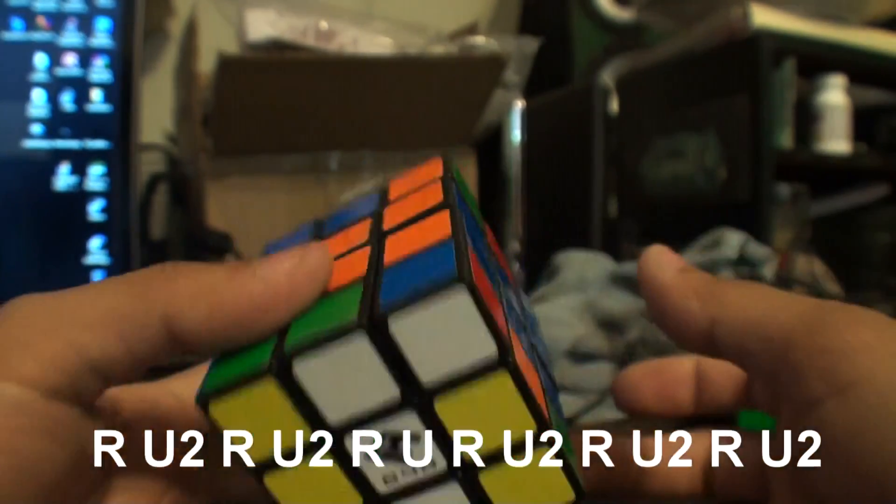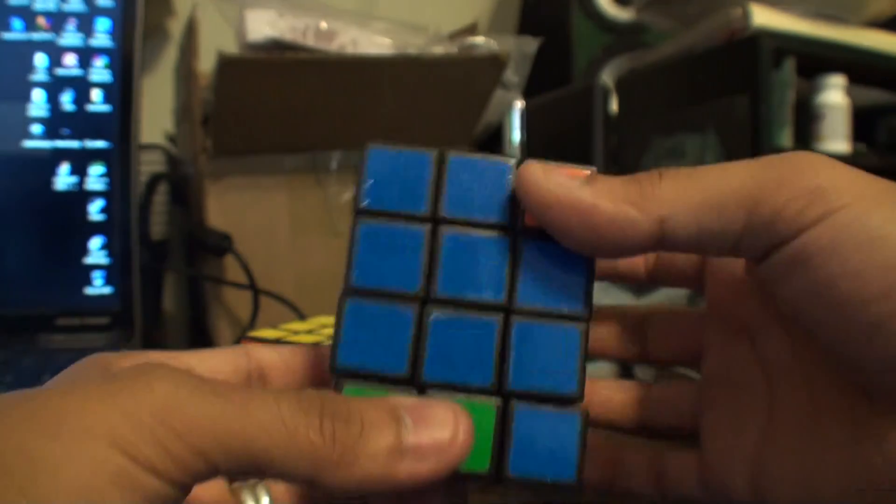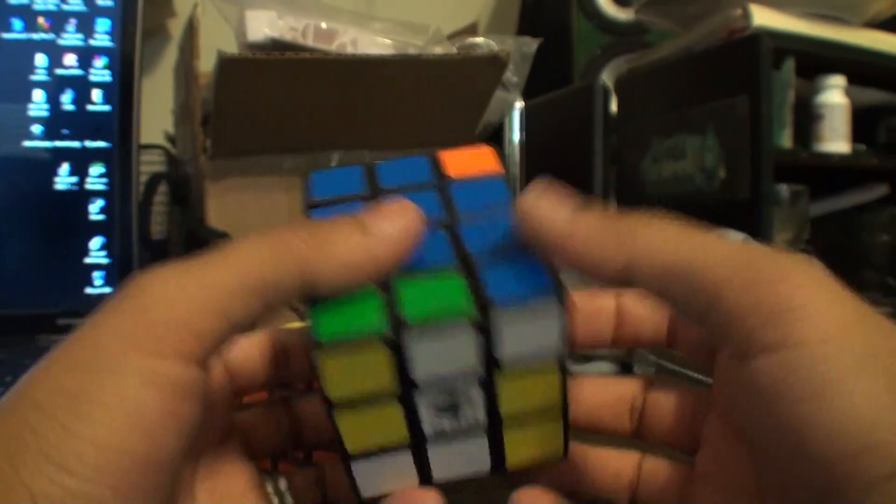Anyway, so R U2 R U2 R U R U2 R U2 R U2 R. And then that's supposed to be U'. Okay, so now you've solved your two middle ones just like a domino.